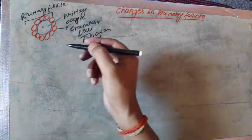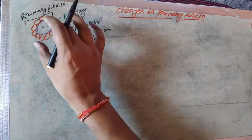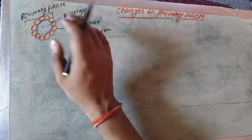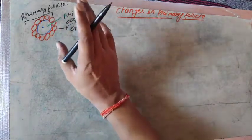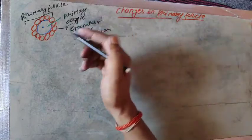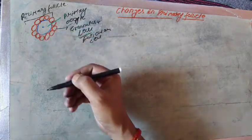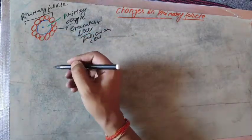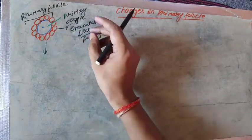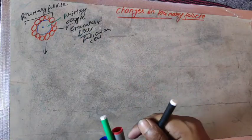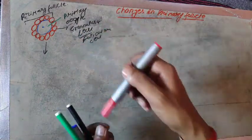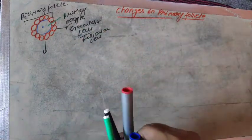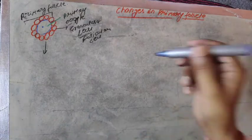Listen carefully. Primary follicles form at the beginning years of the baby and continue till the age of puberty. But before puberty, the granulosa cells form about two to three layers around the primary oocyte.